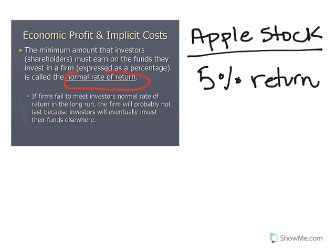If Apple wants me to continue to keep my equity capital in their firm — meaning continue to maintain or purchase more stocks — I need to get at least the normal rate of return, a 5% return on my stocks. Because if that firm fails to meet my normal rate of return in the long run, I'm probably not going to continue to purchase Apple stock and will sell off the existing stock I have.